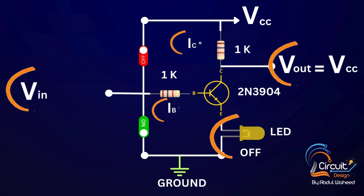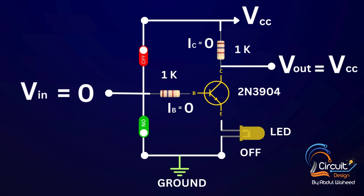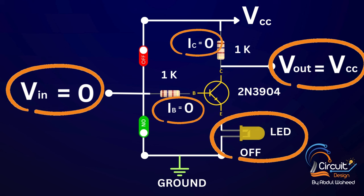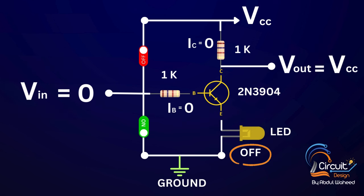Transistor as the open switch: when the input voltage is equal to 0, then base current also becomes 0, the transistor starts working in cutoff region. In cutoff region, transistor acts as an open switch so that output voltage becomes supply voltage, and collector current also becomes 0. In this case LED remains off.